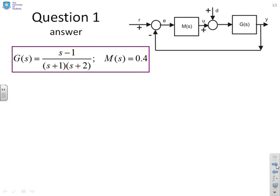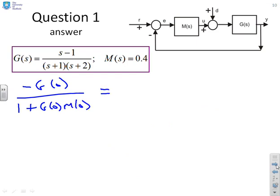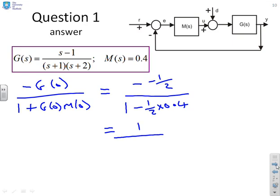Next one: G(s) = (s−1)/((s+1)(s+2)), M = 0.4. There's no integrator, so I go straight into the formula minus G(0) over (1 + G(0)M(0)), which gives minus (minus 1/2) over (1 + (minus 1/2) times 0.4). Multiplying top and bottom by 2 gives 1 over (2 minus 0.4), or 1 over 1.6.